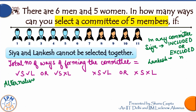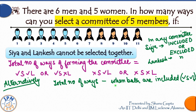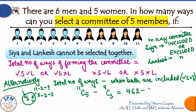Alternatively, using the complementary approach: number of valid committees = total committees − committees where both Sia and Lankesh are included. Total = 11C5 = 462. Committees with both included: include Sia and Lankesh, then choose three from the remaining nine — 9C3 = 84. So the answer is 462 − 84 = 378 ways. Both methods confirm 378.